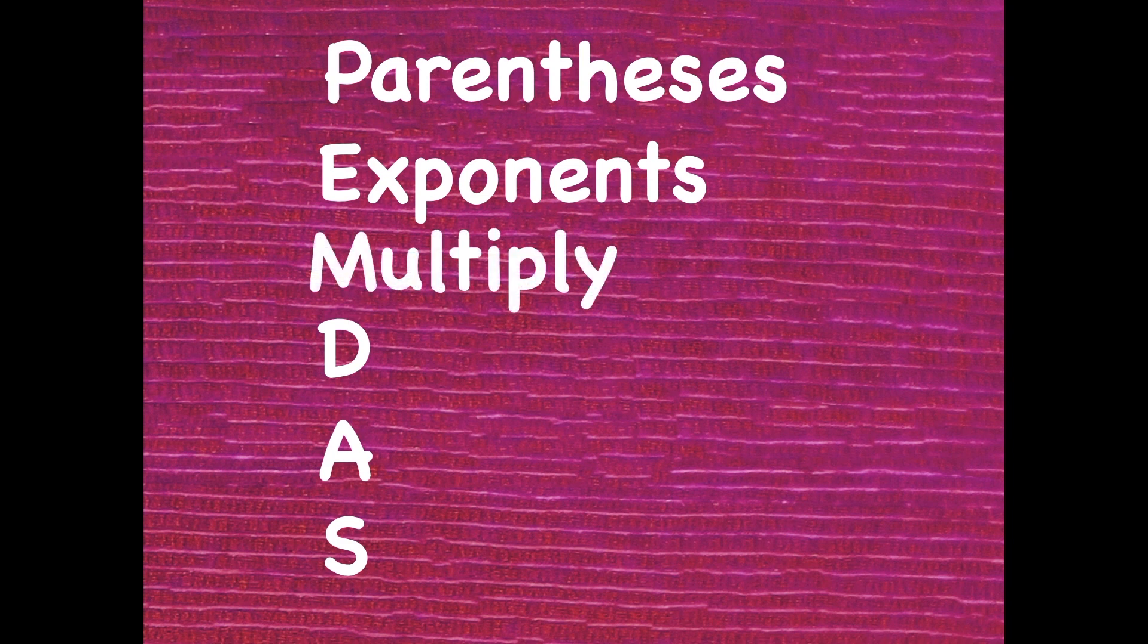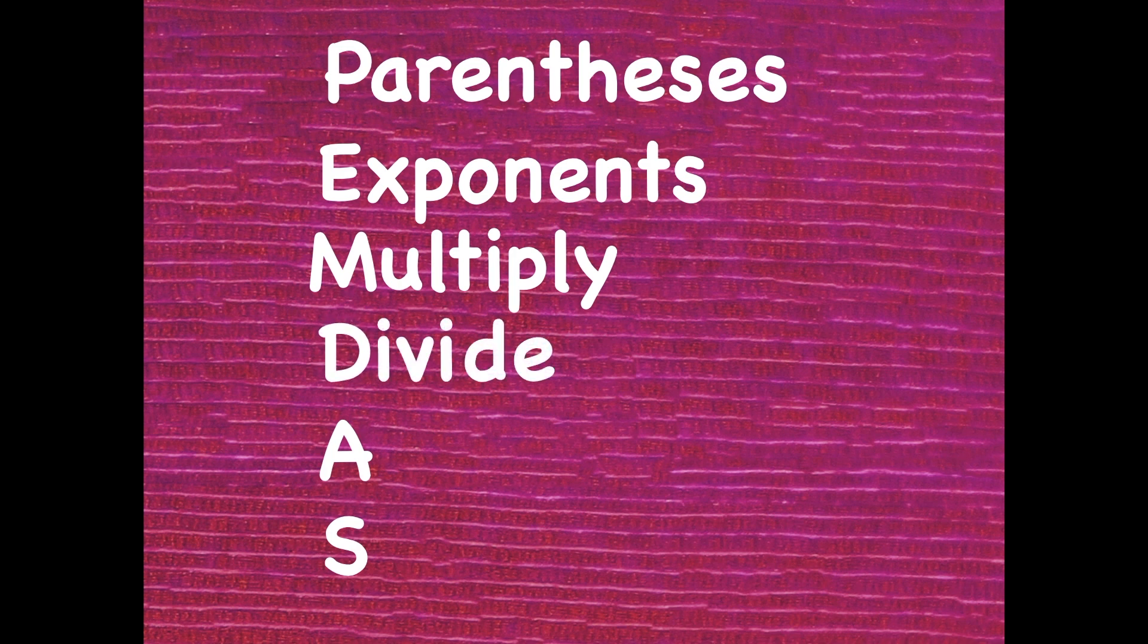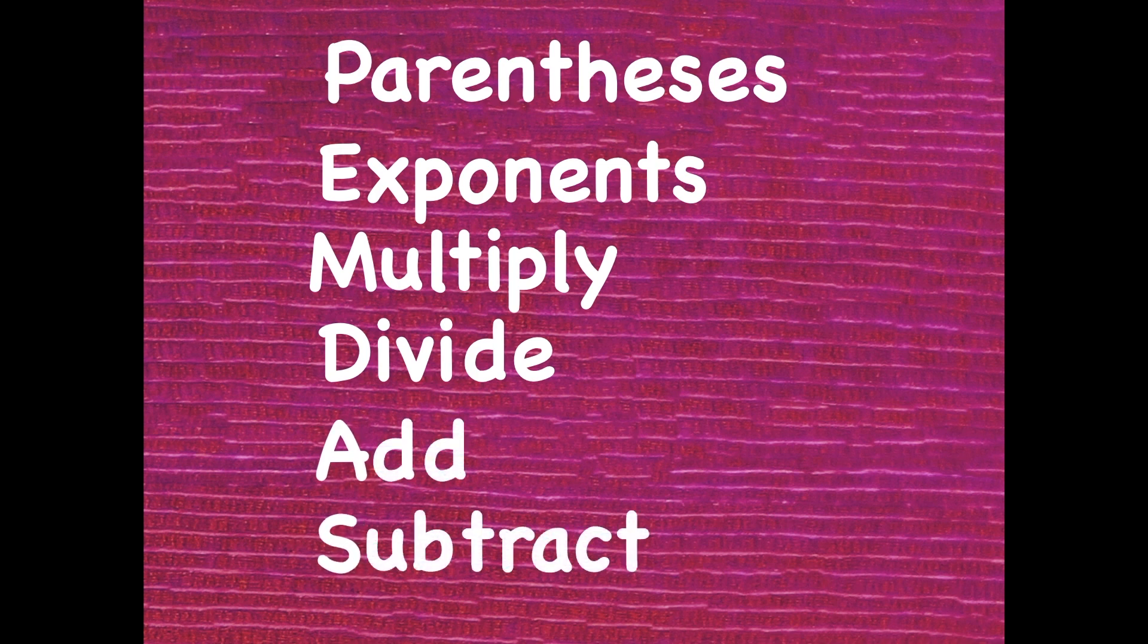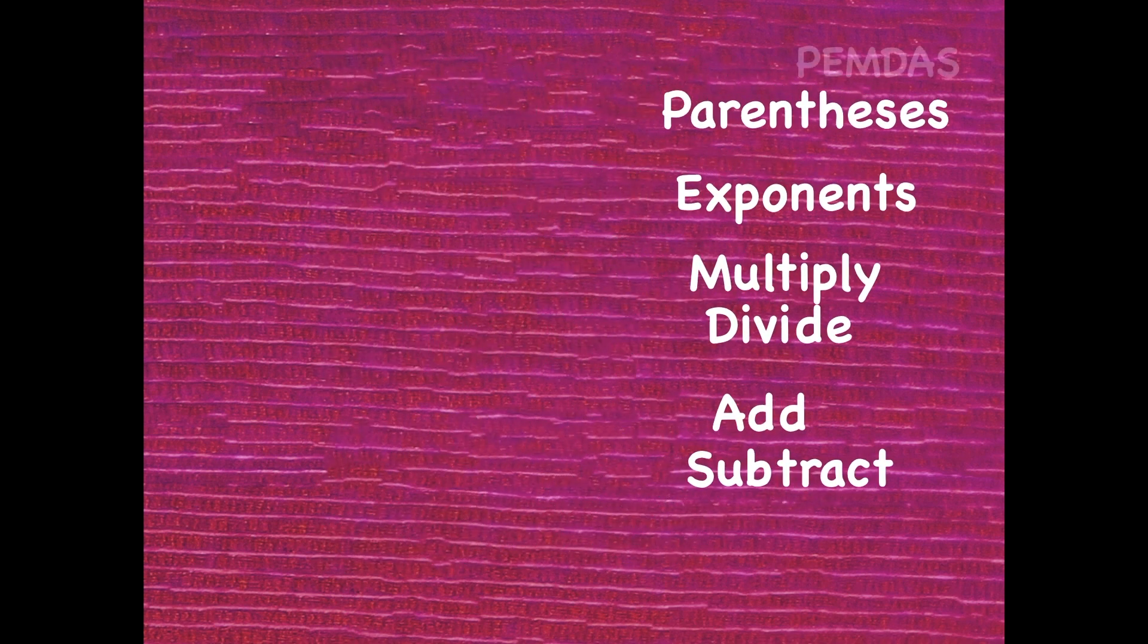And then you would multiply or divide whichever comes first. And the very last step would be adding and or subtracting. Whichever one comes first between adding and subtracting. That's the order you need to solve a problem in when there's more than one operation.